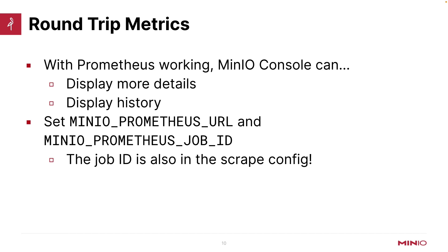How do you get the data back into MinIO? Once Prometheus is running and has a job ID, you just tell MinIO using a couple of environment variables where the Prometheus server is residing and what the Prometheus job ID is. The Prometheus job ID is in the scrape config — you can change it to whatever you want, but the default is 'MinIO job,' available immediately once you've got this set up.